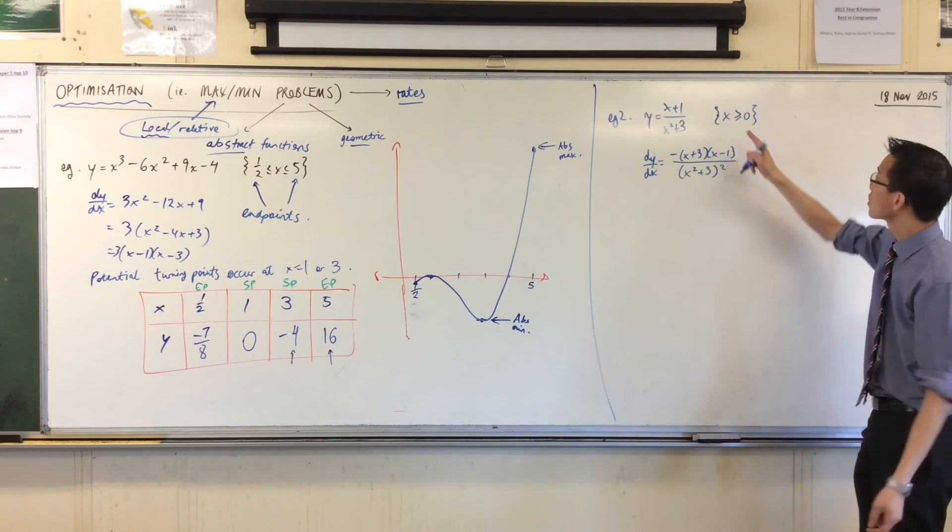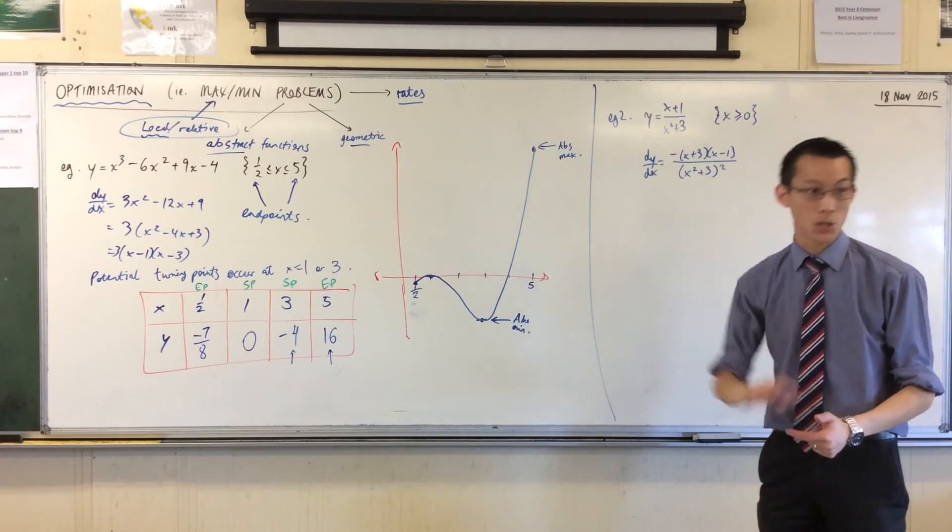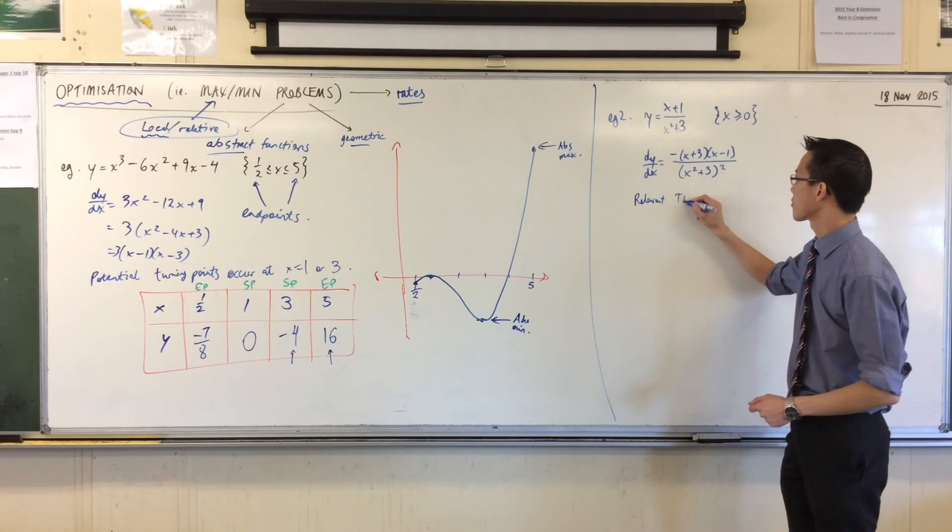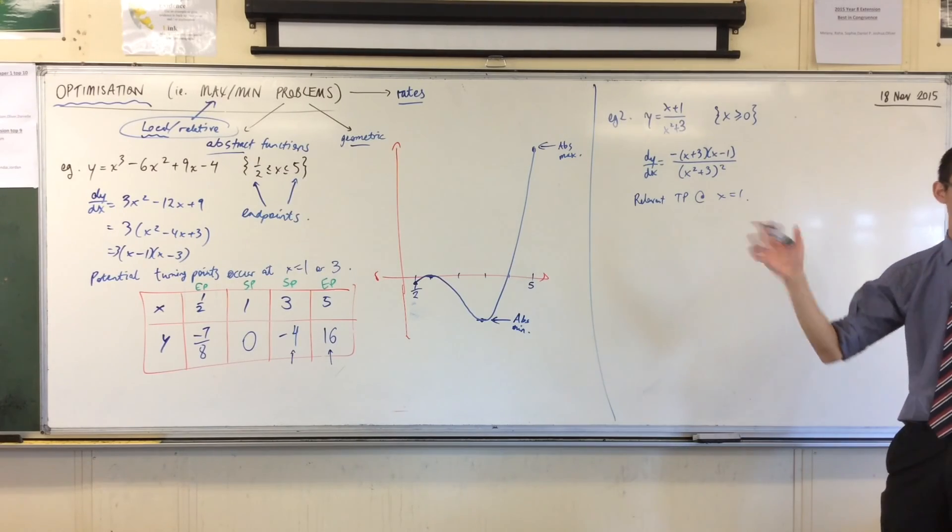However, when you look at the restricted domain, negative 3 is outside of the domain I'm interested in. So I reject that, okay? So the only relevant turning point occurs at x equals 1. Are you okay with that? And I'm just going to ignore the other one.